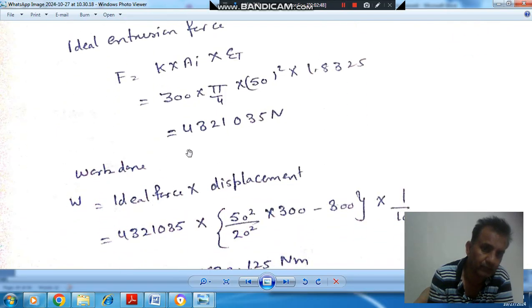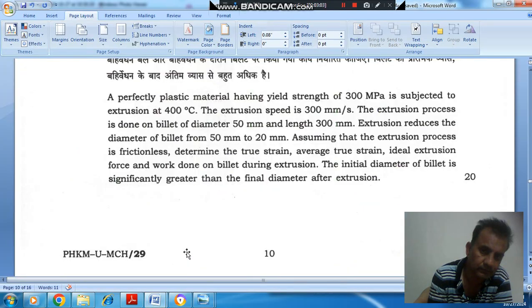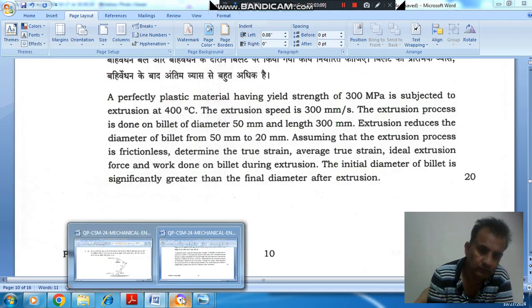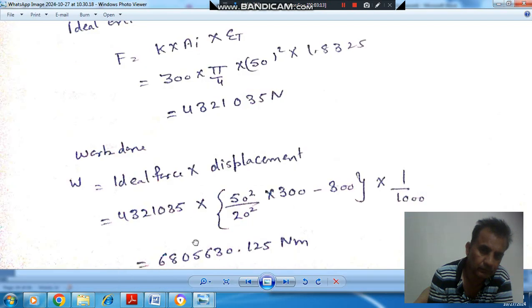And work done is ideal force into displacement. Final length is 300 × 50²/20², and this is the initial length. So that is the ideal work done. Thank you.